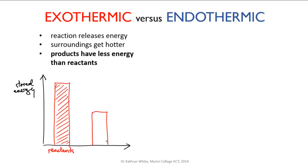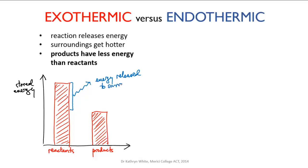That means that the amount of chemical energy in the products must be less than the energy that was stored in the reactants. And the difference between those values is the energy that's released as heat or light.